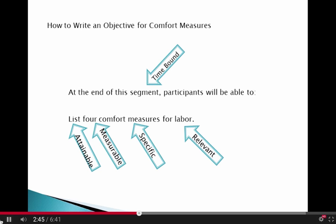Here is an example of an objective with the active and attainable verb LIST, with the measurable number 4. The topic Comfort Measures would be specific to your class. The objective will be covered during the identified segment, which is a definite time assigned to it, and it is relevant to the overall topic of labor.